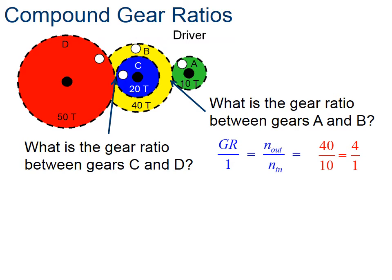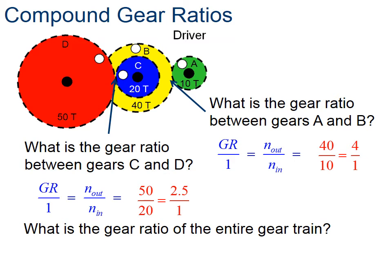Then we have to look at C and D. We've got 50 teeth and 20 teeth. We don't do anything—there's no gear ratio between B and C because they're not meshed. So for the entire gear train, we multiply the two together. So we get 4 times 2.5, and we get a gear ratio of 10.